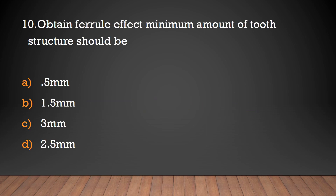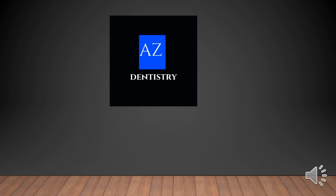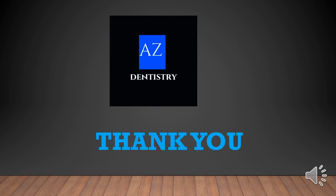To obtain the ferrule effect, the minimum amount of tooth structure should be: 0.5 mm, 1.5 mm, 3 mm, or 2.5 mm? The answer is 1.5 mm.